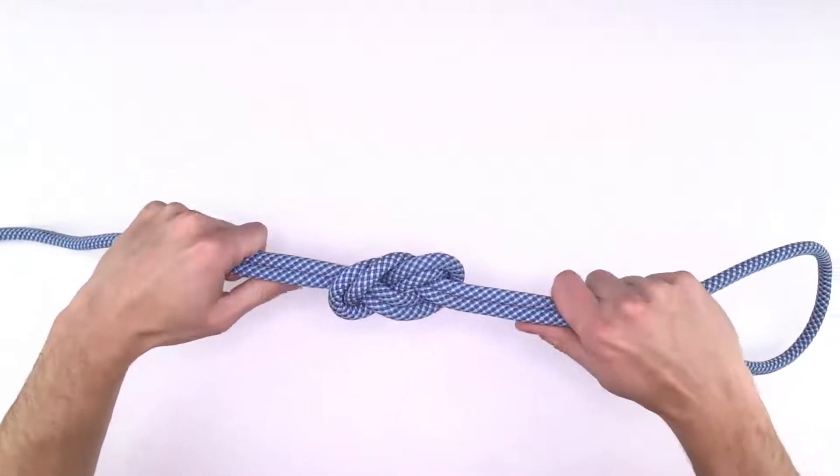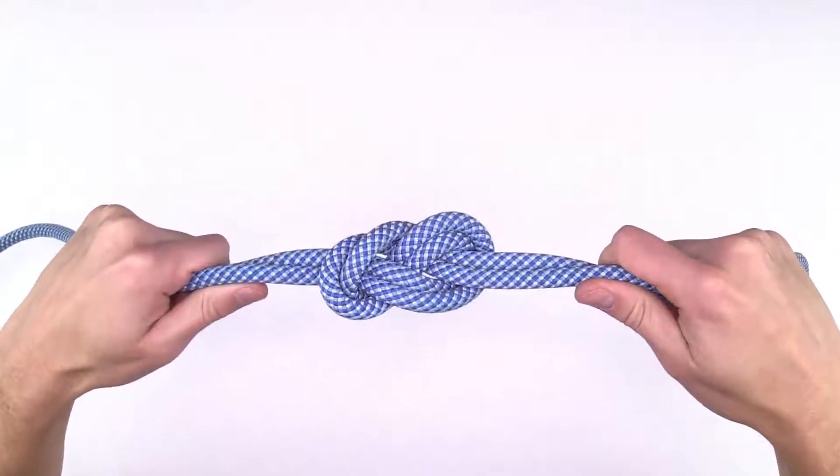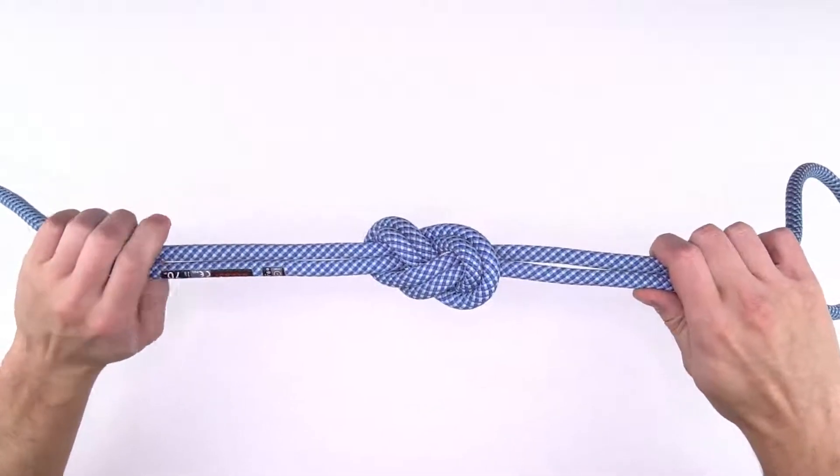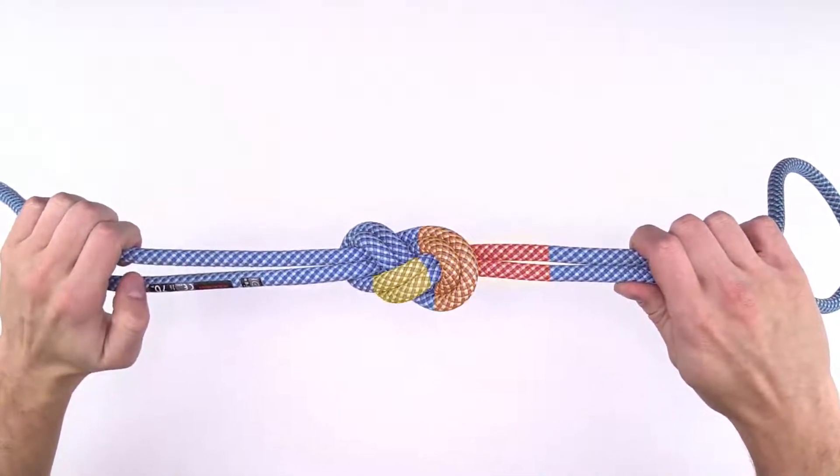To make sure that you've tied the knot correctly, double check by looking for five pairs of two ropes in your figure eight. One, two, three, four, five.